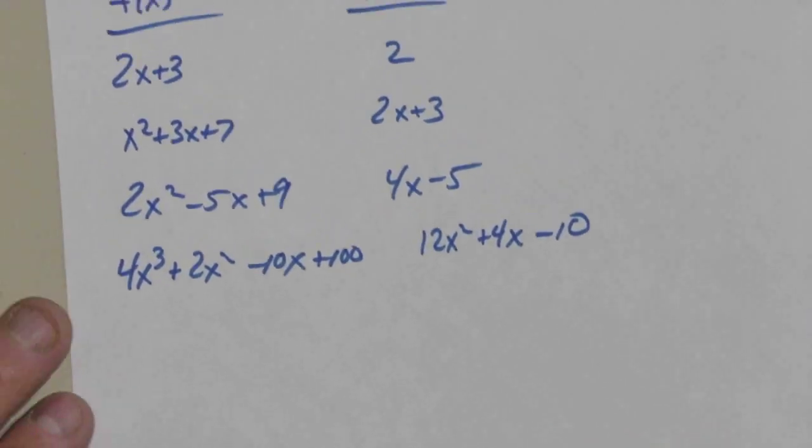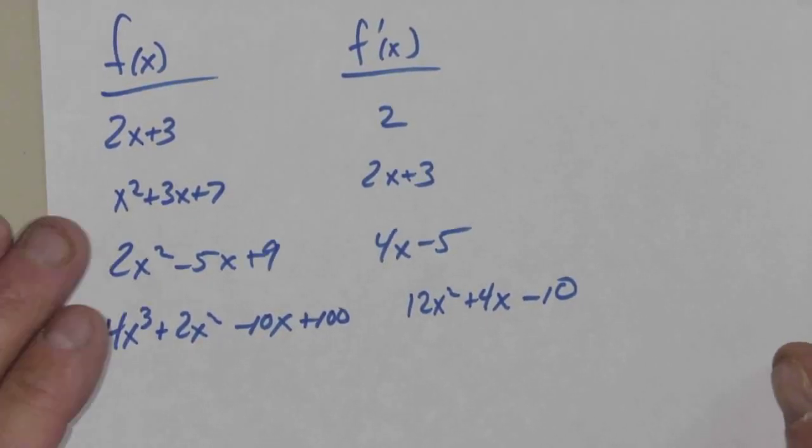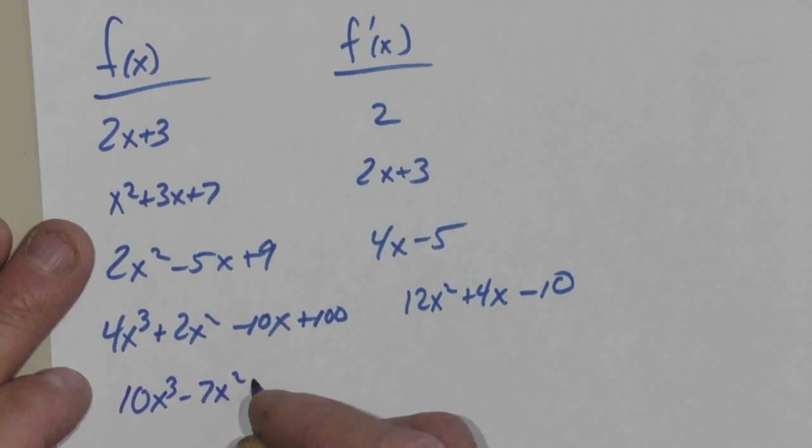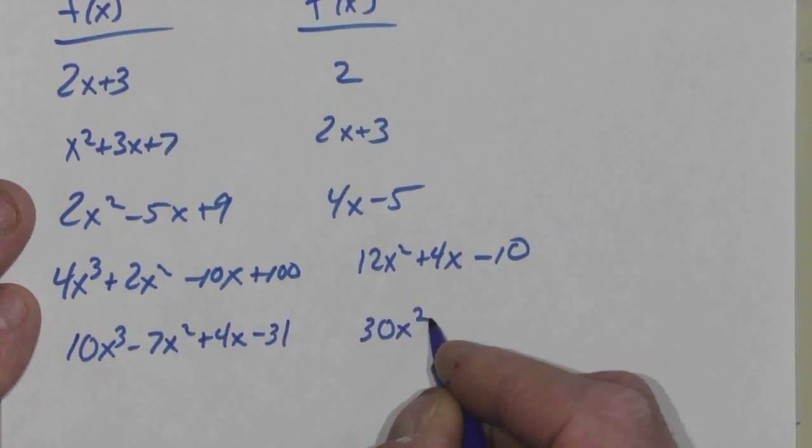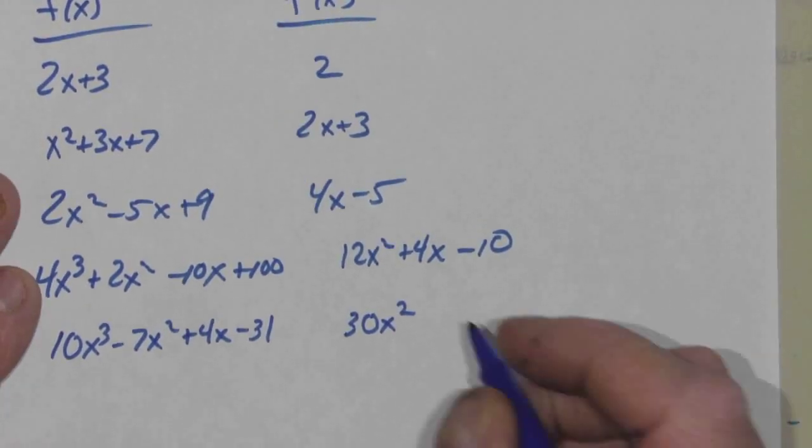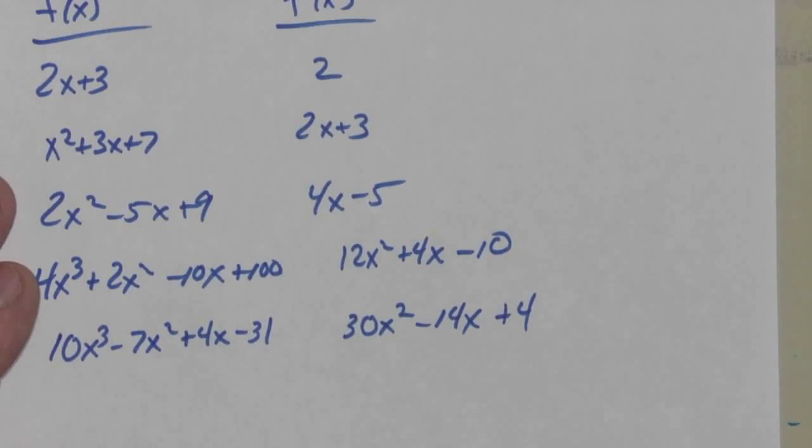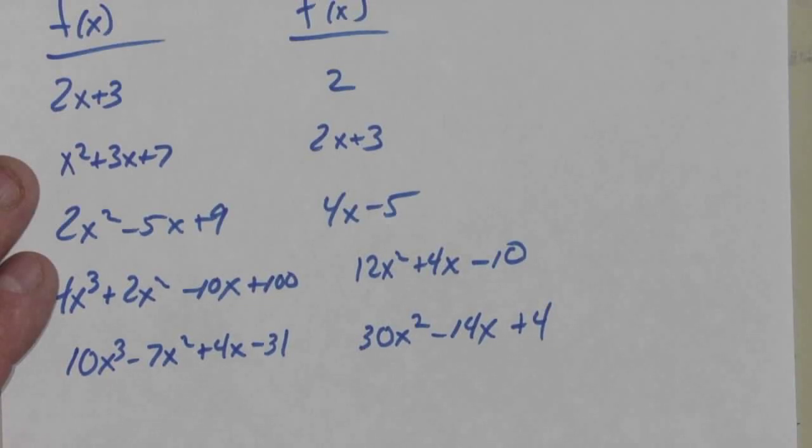So did anybody see a shortcut? Let me give you another example. I know the shortcut, so I'm just going to share with you. So if I had 10x to the third minus 7x squared plus 4x minus 31, my derivative would be 30x squared minus 14x plus 4. You see it, JT? Yeah. Okay. JT. I'm going to put one up. You want to give it a shot? Yeah, I'll give it a shot.